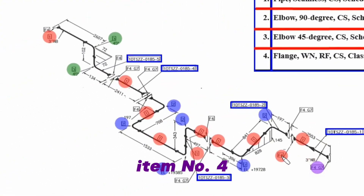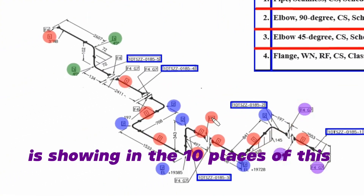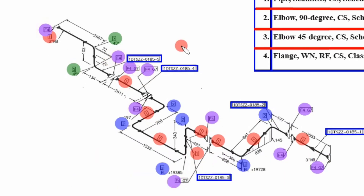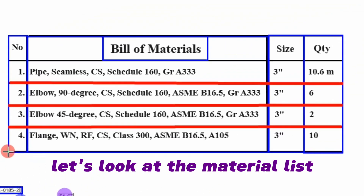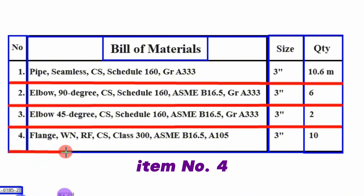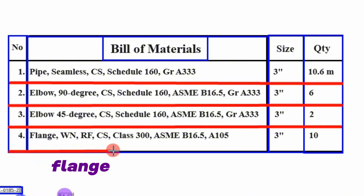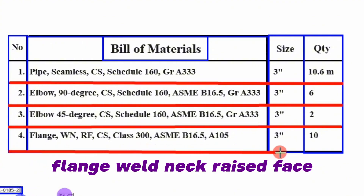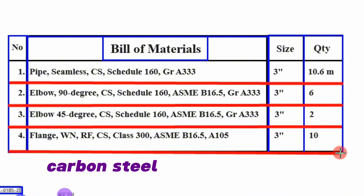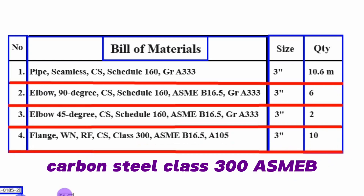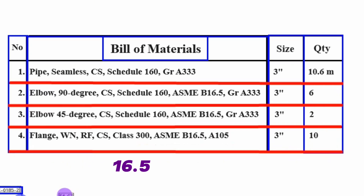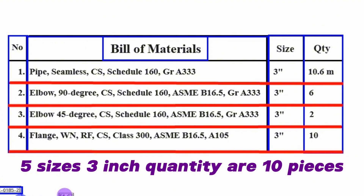Item number 4 is shown in ten places of this piping isometric drawing. Item number 4: Flange, weld neck, raised face, carbon steel, class 300, ASME B16.5, grade A105, size 3 inch, quantity 10 pieces.